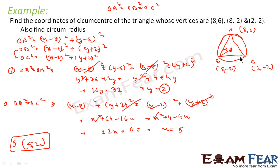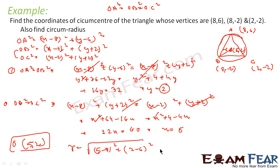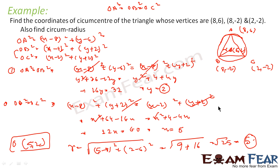Now that we have the circumcenter O = (5, 2), we can find the circumradius. Taking point A = (8, 6): r = root of (5−8)² + (2−6)² = root of 9 + 16 = root of 25 = 5. So the circumradius is 5 units. We equated OA² = OB² = OC² to find the center, then computed the radius.